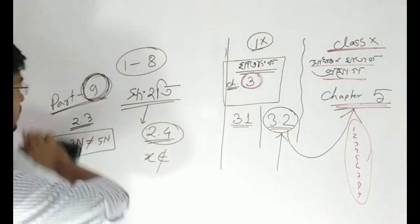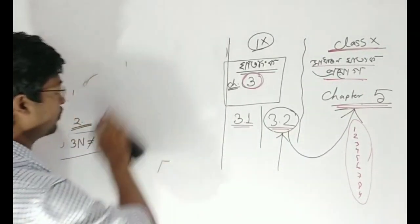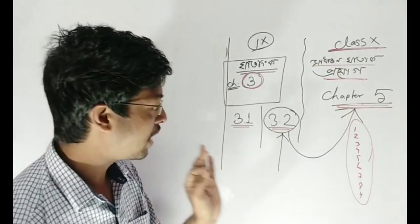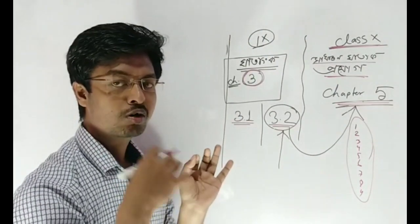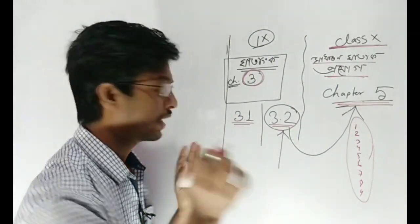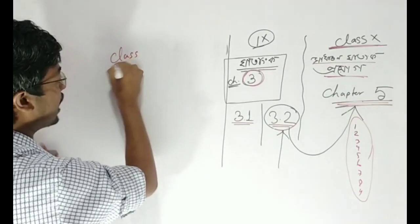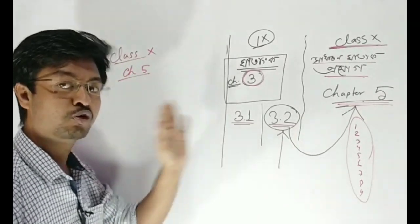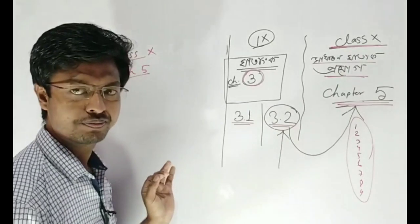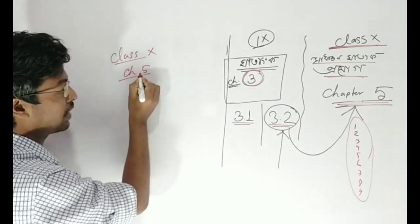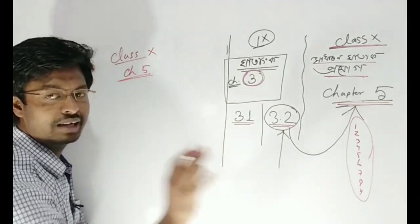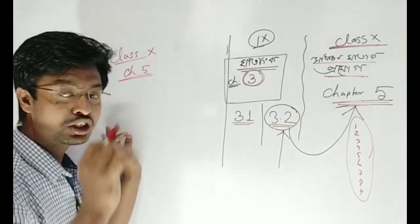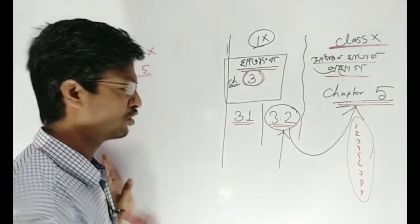I will read the first one. First, what do you do? First, you will read the student — or what do you do? Class tenor, chapter number 5. When you read chapter number 5, you will read the photo. You will read the chapter number 5. So this is a very important thing.